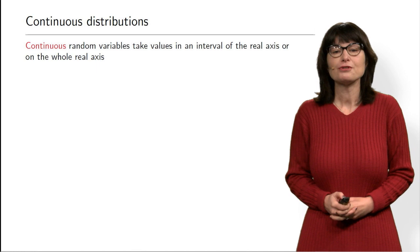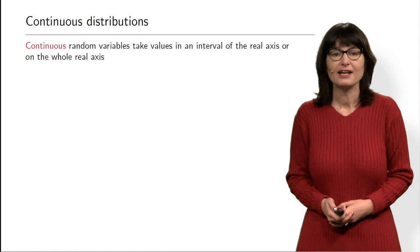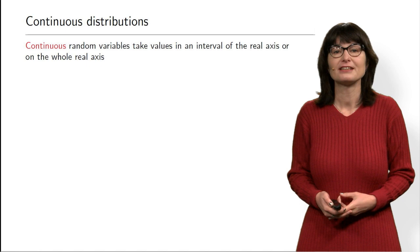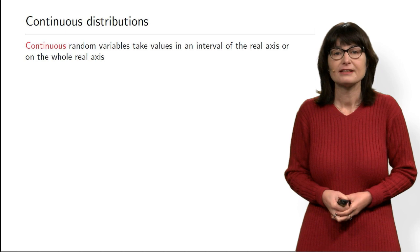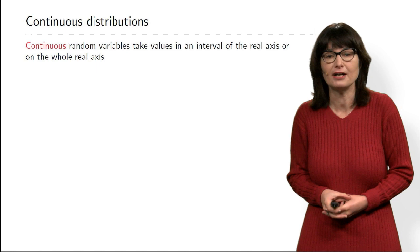First of all, any probability distribution is a model for something in real life. Continuous distributions model random variables which can take not just specific values like 0, 1, 2, etc., but values in a particular interval — a part of the real axis.